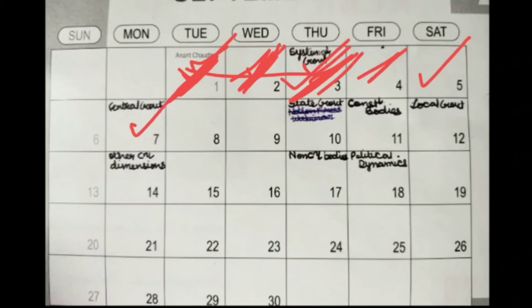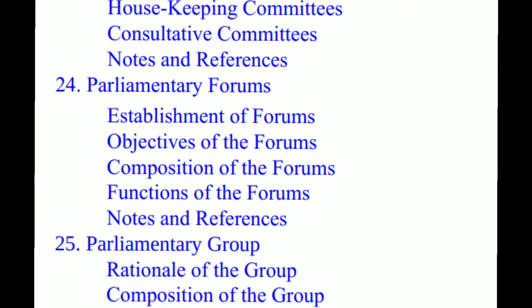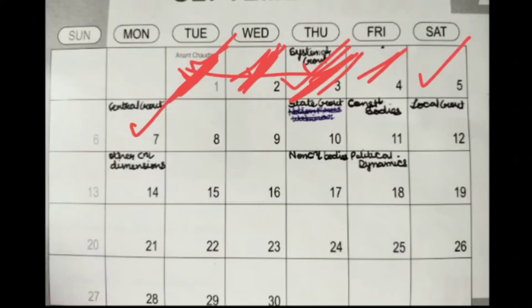On day seven — technically day six but let's move forward — you complete chapters 23, 24, and 25: Parliamentary Committees, Parliamentary Forums, and Parliamentary Groups, because all three are very easy and quick to cover. Along with this, I also covered the special status of Jammu and Kashmir, because it's important to know what was initially there and what has changed.